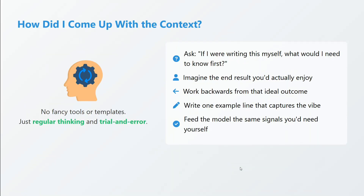How do you come up with the context? Ask yourself: if I were writing this myself, what would I need? If your manager asked you to write a blog on AI, you'd ask back — how long? Casual or formal? GPT requires the same information. Imagine the end result you would enjoy, then work backwards from that ideal outcome. Write one example — adding examples to prompts takes your LLM output to another level. Feed the model the same signals you would need yourself.